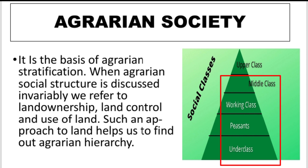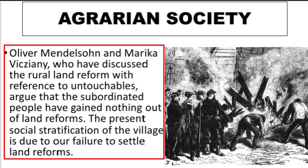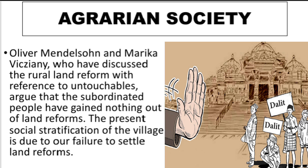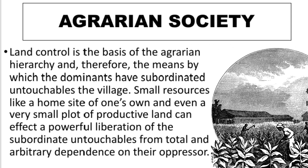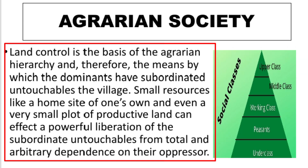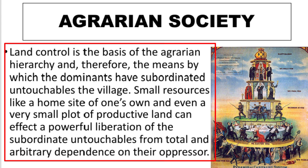The hierarchy shows which is the dominant caste that controls the major portion of land and suppresses and exploits working and subordinate classes. Scholars like Oliver, Mendelsson, and Marika discuss the concept of land reform. They argue that untouchability and subordinate classes gain nothing from land reforms. The present social stratification is a result of the failure of land reforms, where control over land forms the basis of agrarian hierarchy between dominant and subordinate classes.